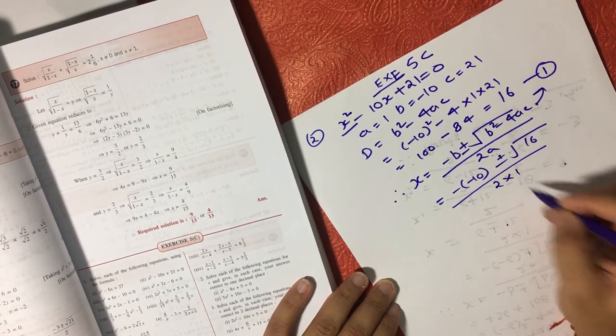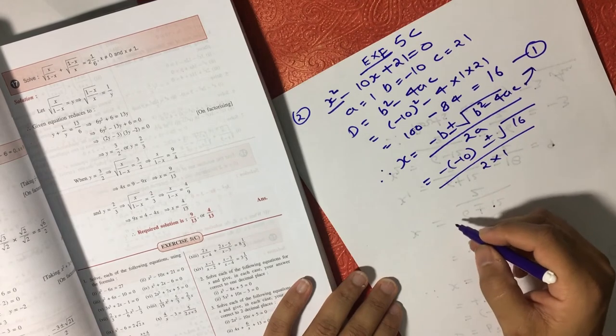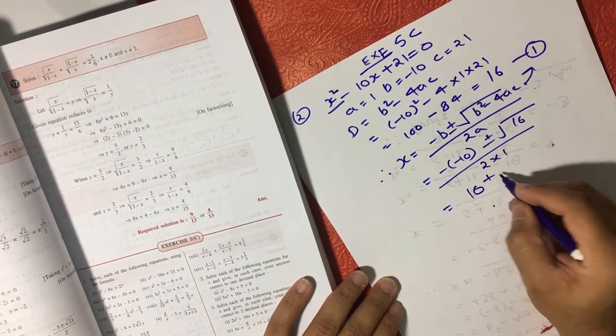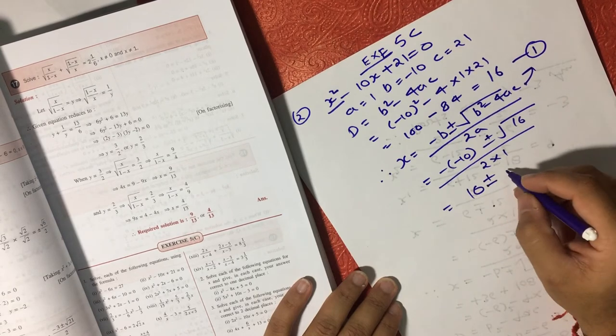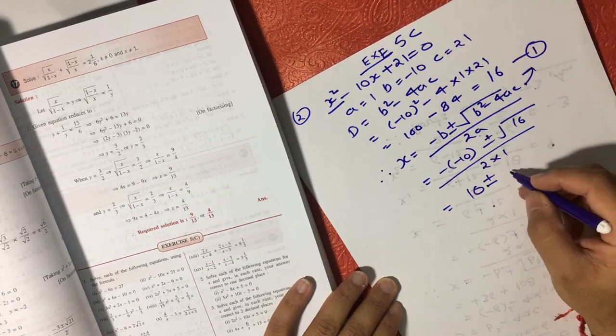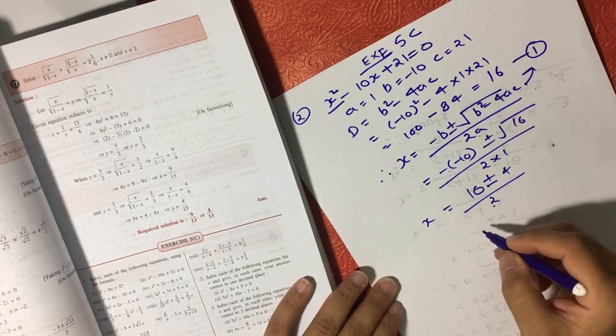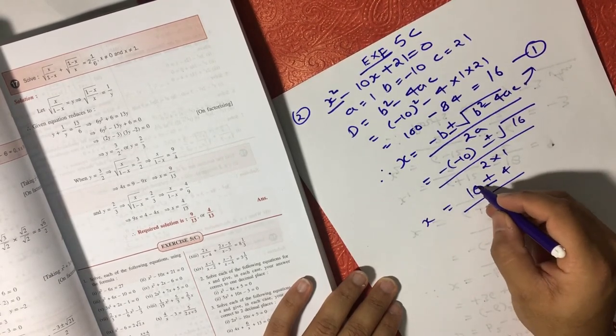Square root of 16 is 4, so (10 ± 4) / 2. That's the value of x. Now here we can see we have two values of x. If we are considering the plus as one of the equations, then...